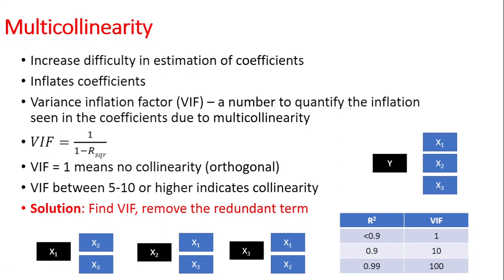Usually when the VIF is between 5 and 10 or higher, that means collinearity could be a problem.